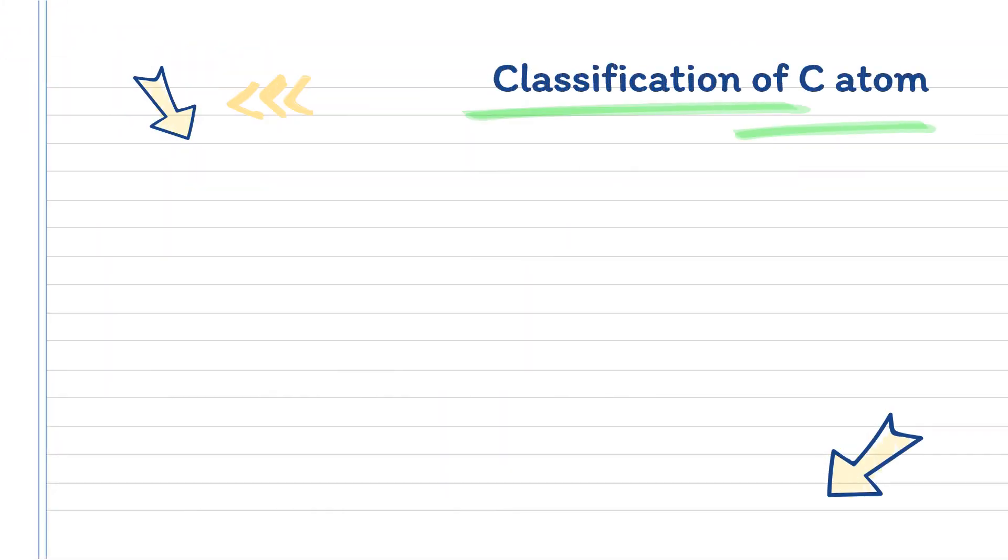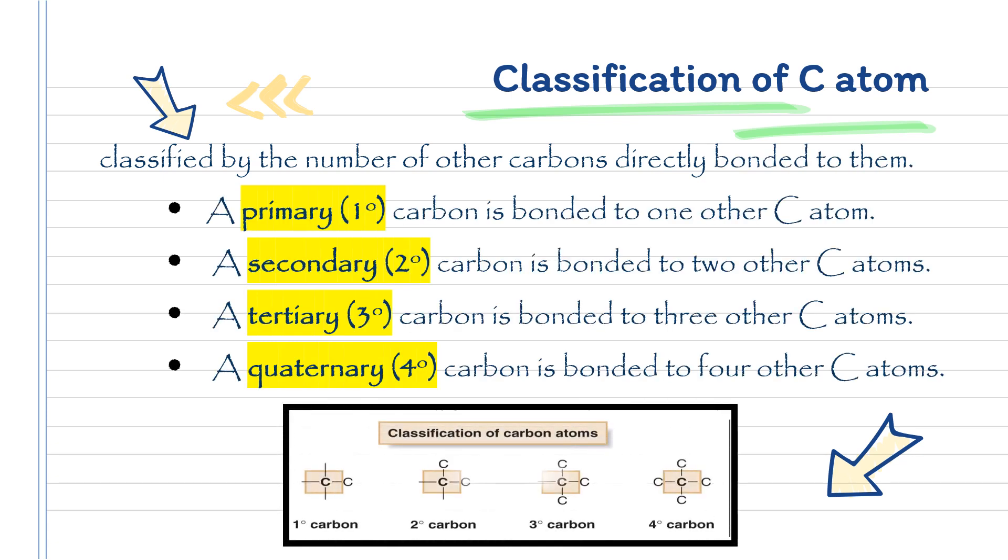Now let's look at the classification of carbon atoms in organic compounds. Structural formulas of organic compounds show carbon atoms bonded differently. These carbon atoms are known as methyl, primary, secondary, tertiary, and quaternary.